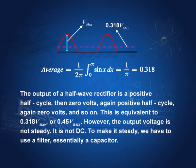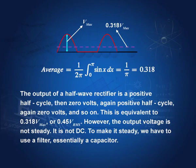We can calculate the average voltage in terms of V max. The average would be (1/2π) times the integral of sin(x) dx from 0 to π only, and this value is 0.318. So the average value of the rectified voltage is 0.318 V max. Since V max is √2 times the RMS value, it is 0.45 times V_RMS. However, the output voltage is not steady — it is not DC. To make it steady, we have to use a filter, especially a capacitor.